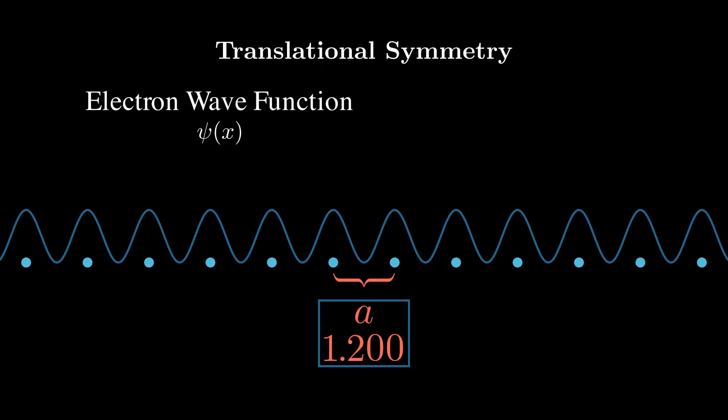Since our crystal lattice is periodic, it has this translational symmetry, the wave function should also be periodic. Or rather, the magnitude squared of the wave function should be periodic. And this is just a law of quantum mechanics if you're not familiar with it.